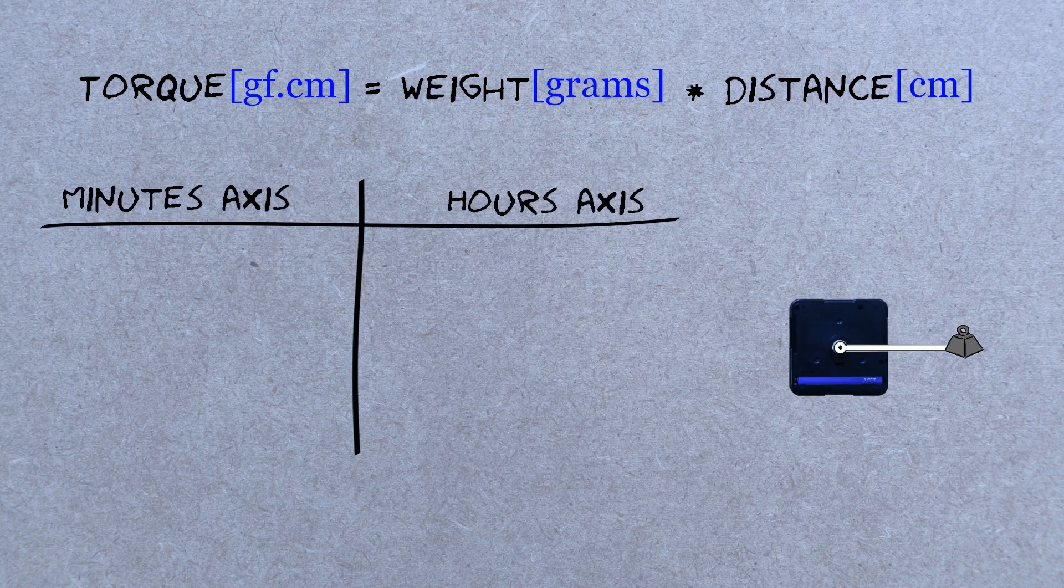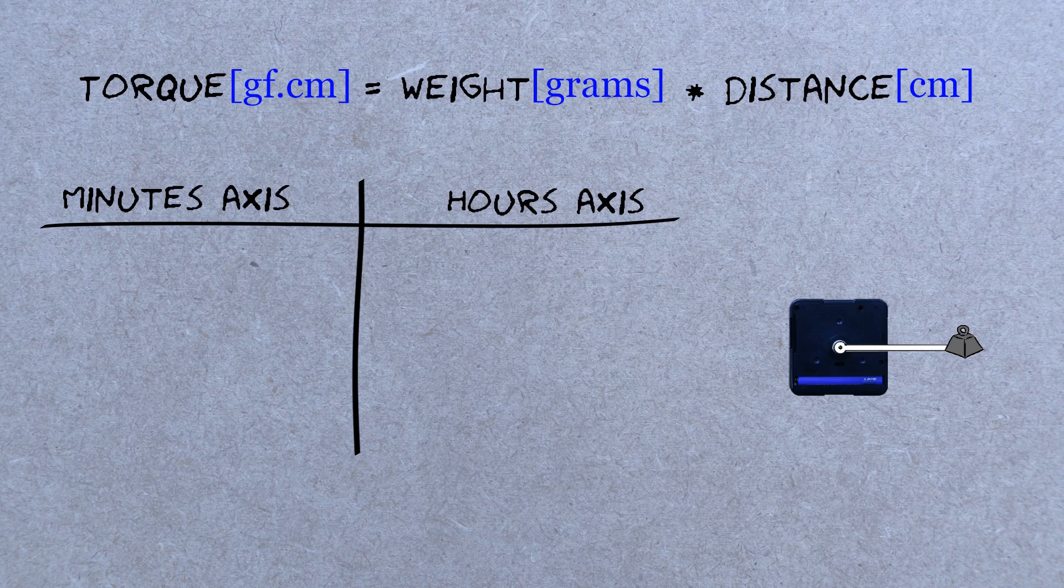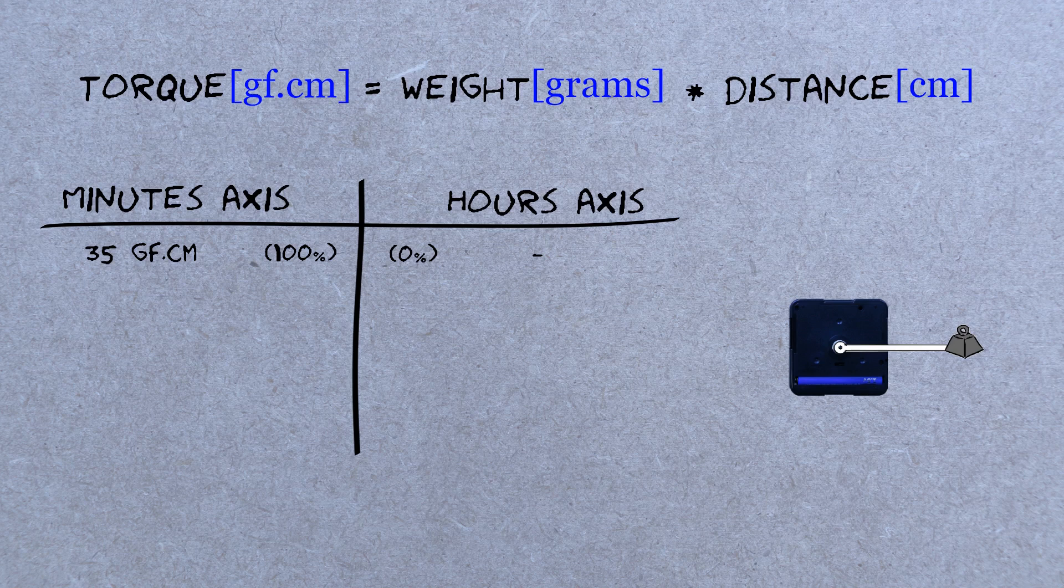I did some measurements with the few clock movements that I have. So, if we only use the minutes axis, then the maximum possible torque from that axis is about 35 gram force centimeters.